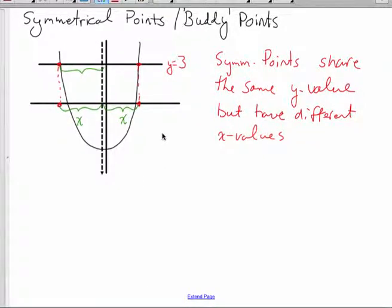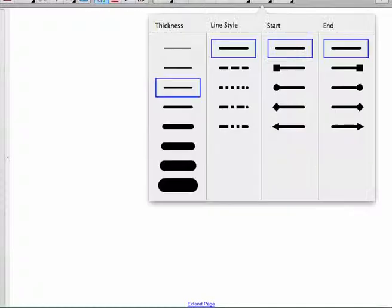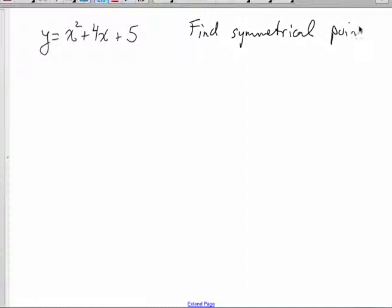Okay, so how do we use, why are buddy points useful? Well, we can use them to help us graph a parabola. So, let's say I'm given the equation y equals x squared plus 4x plus 5. And I want to find various buddy points. So find symmetrical points.